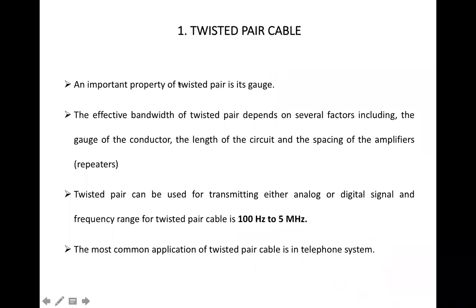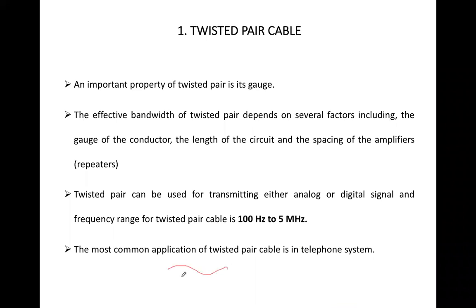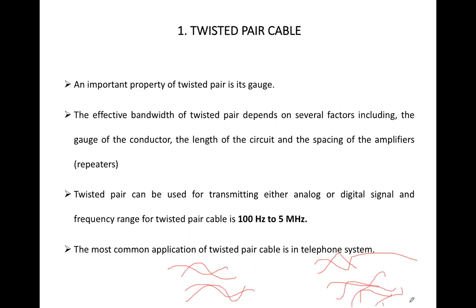When using twisted pair cable in LAN or telephone networks, there is not only one pair. In a telephone line there are two pairs — meaning four cables. In a computer network there are four pairs — meaning eight cables — all bundled in one plastic jacket. In a local area network, the number of cables is eight and the number of pairs is four; in telephone networks, commonly four cables and two pairs are used.